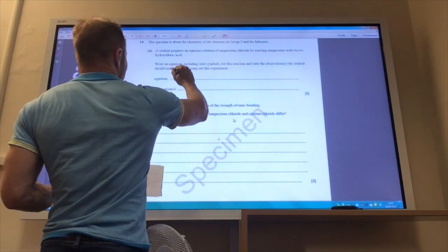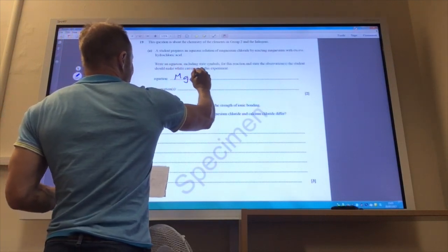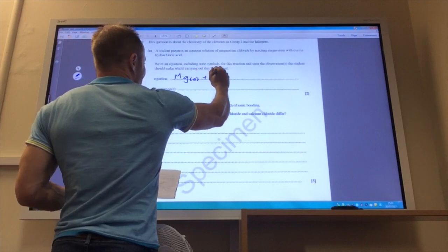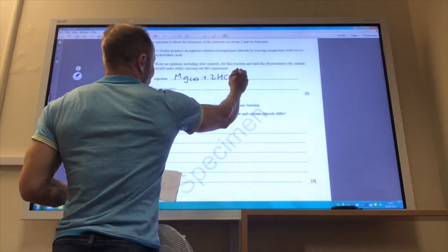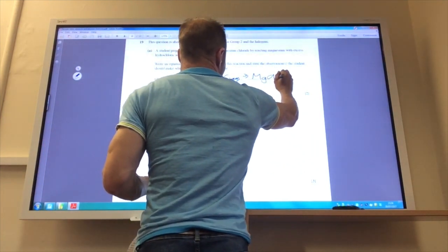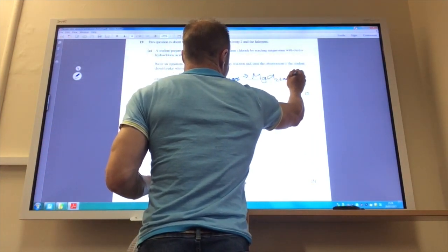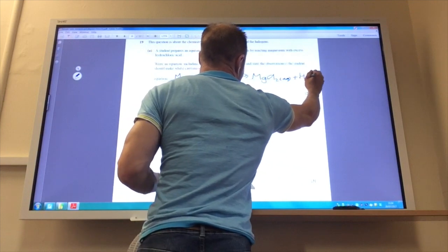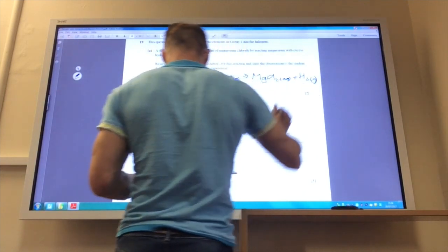And observation, I want to state symbols as well. So of course, magnesium will be a solid, HCl will be aqueous. The formula of magnesium chloride, MgCl2, that will be aqueous and you're going to make hydrogen gas like so.